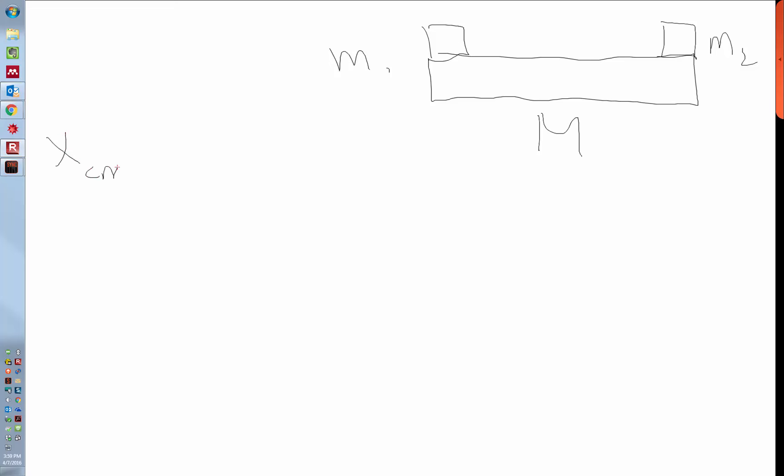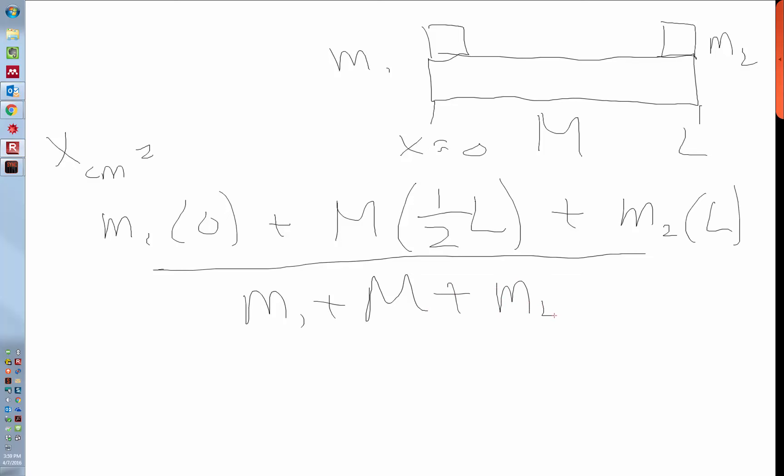Then the position of the center of mass is, we just add all three. So if we start at x equals 0 at the left end, that means we have M1 times 0, plus now the big M, and its position is at half an L. That's where the center of mass of the rod is, plus M2 times the other side, which is L, and we divide by all three, M1 plus M plus M2. And you can simplify that and get the answer.